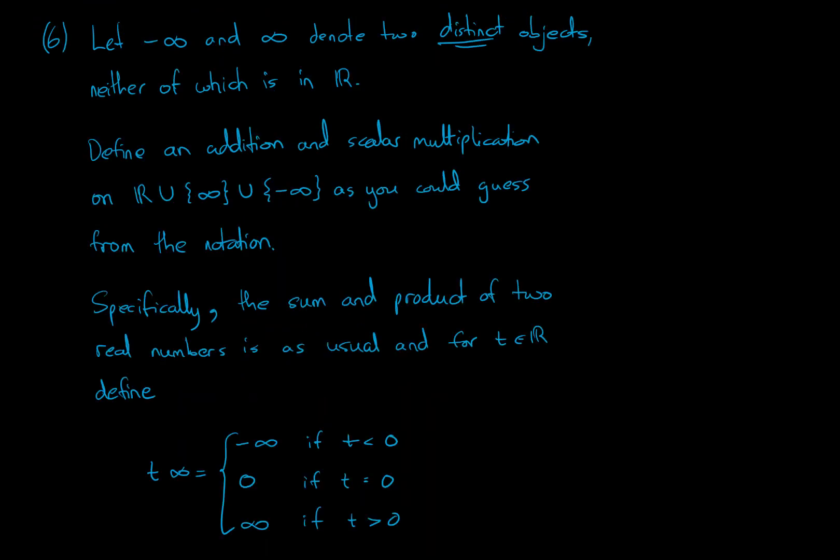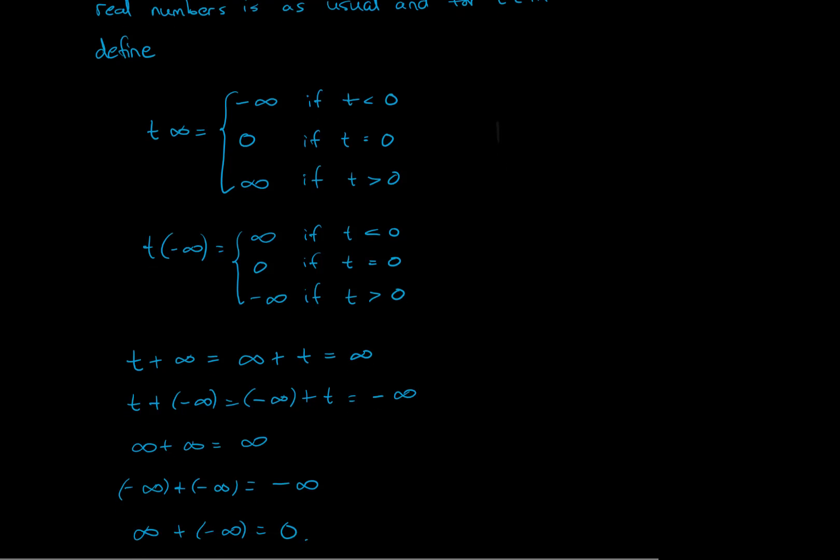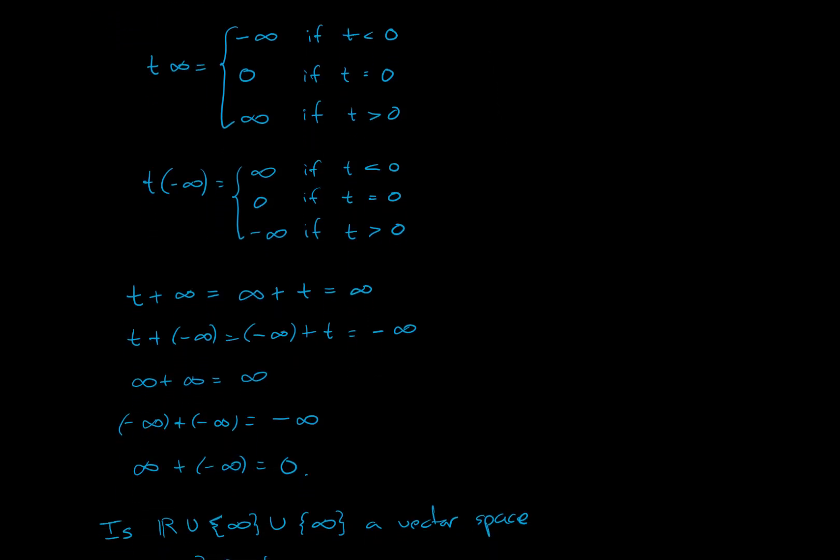Question six: let −∞ and ∞ denote two distinct objects, neither of which is in ℝ. And we define a new set, which is the union. So we take the real numbers and union it with two extra elements, namely positive and negative infinity.